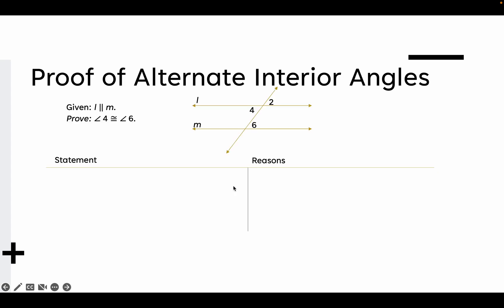Alright, now let's actually get to proving those. We're given that L is parallel to M, and our job is going to be to prove that angle 4 is congruent to angle 6.